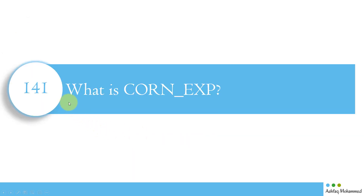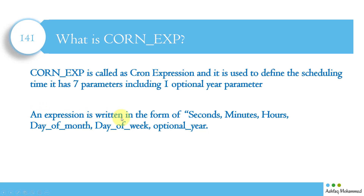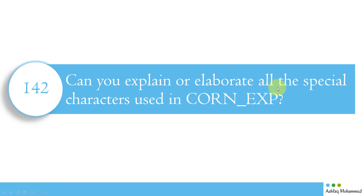What is a cron expression? A cron expression (cron_expression) is used to define the scheduling times. It has seven parameters, including one optional year parameter. A cron expression is written in the form of: seconds, minutes, hours, day of the month, month, day of the week, and optionally year. We have already seen an example of this.